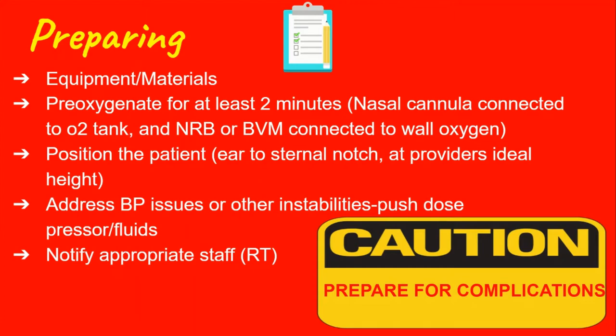On the next slide we'll go over specific equipment needed, but the most important aspect of preparing for RSI is pre-oxygenation. The most important aspect of preparing for rapid sequence intubation is pre-oxygenation — meaning we place the patient on high levels of oxygen in order to build up the oxygen levels within the body so that while they are being intubated and not breathing, the body has a reserve of oxygen that it can use.